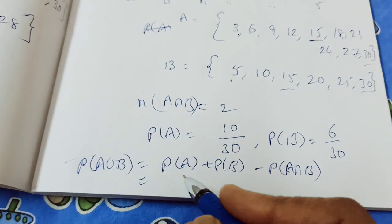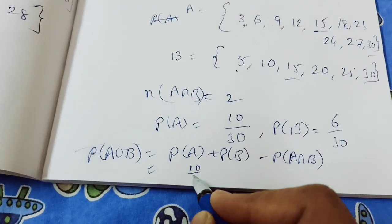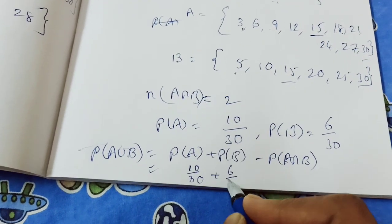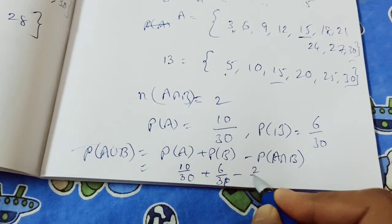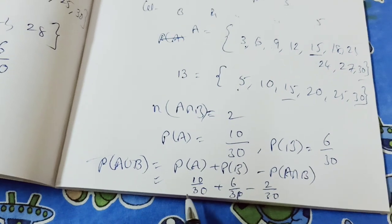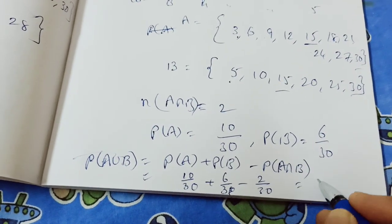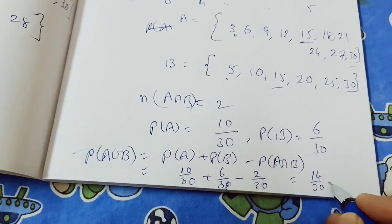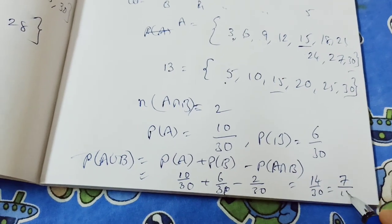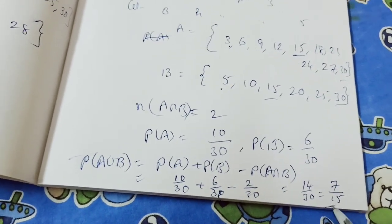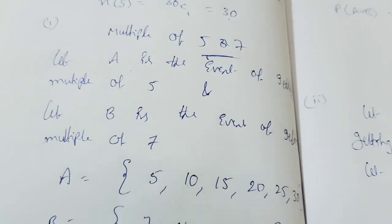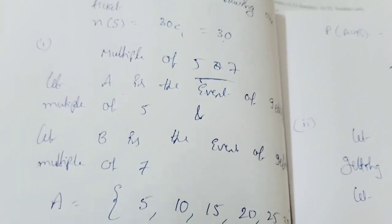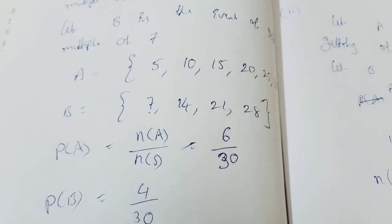Applying the formula: P(A union B) = 10 by 30 plus 6 by 30 minus 2 by 30. That gives 14 by 30, which simplifies to 7 by 15. That is the answer.